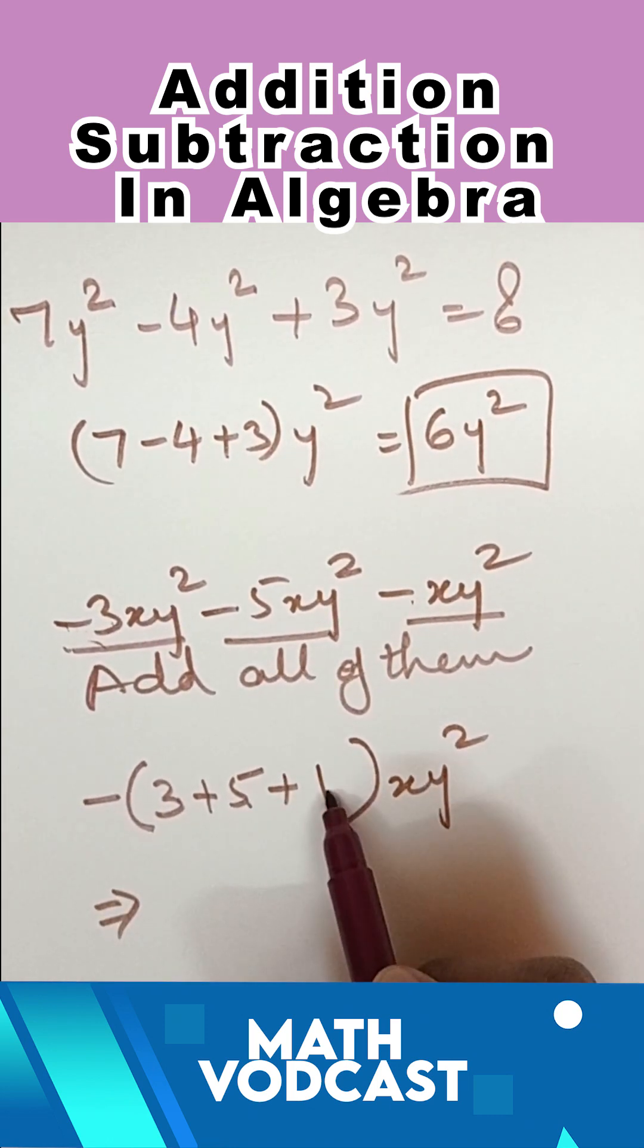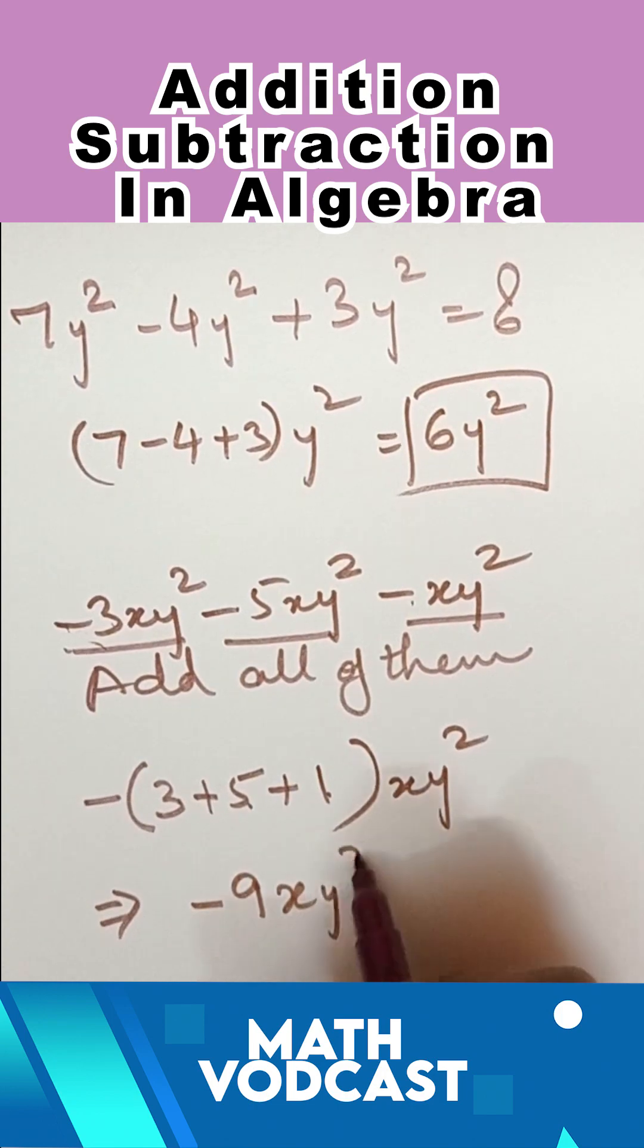So 3 plus 5 is 8, and 8 plus 1 is 9. This equals minus 9xy².